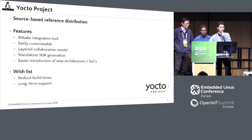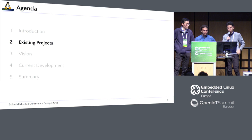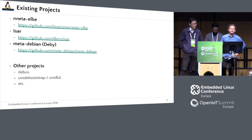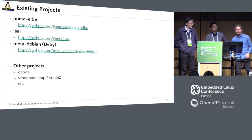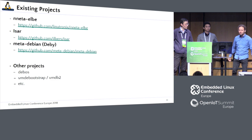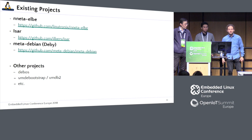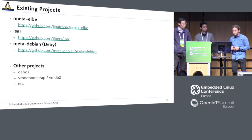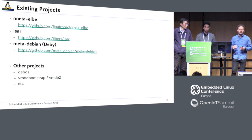So let me change the speaker here. I want to present the existing projects that more or less fit into this area. We have identified three projects that are using some combination of BitBake and Debian already. These are Neta Elbe, which I will present because I'm also the maintainer; then Ether, maintained by Borsham; and Meta Debian, represented by Kazoo. We will give you a quick overview of these three existing approaches.